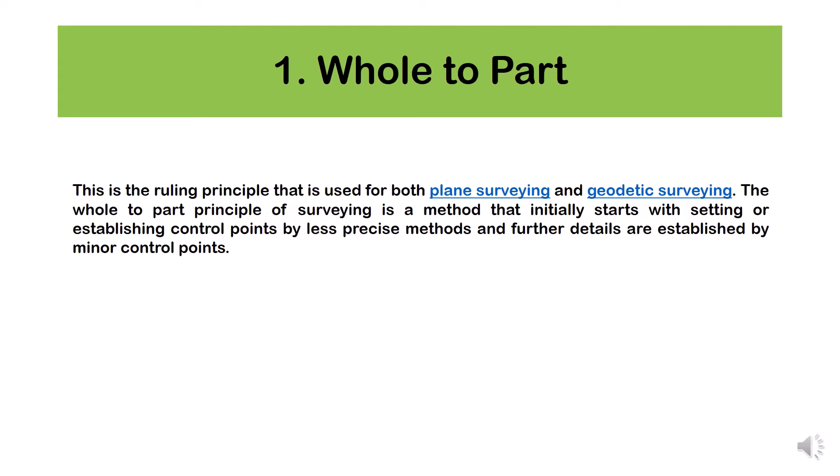The hold-to-part principle of surveying is a method that initially starts with setting or establishing control points by less precise methods, and further details are established by minor control points.